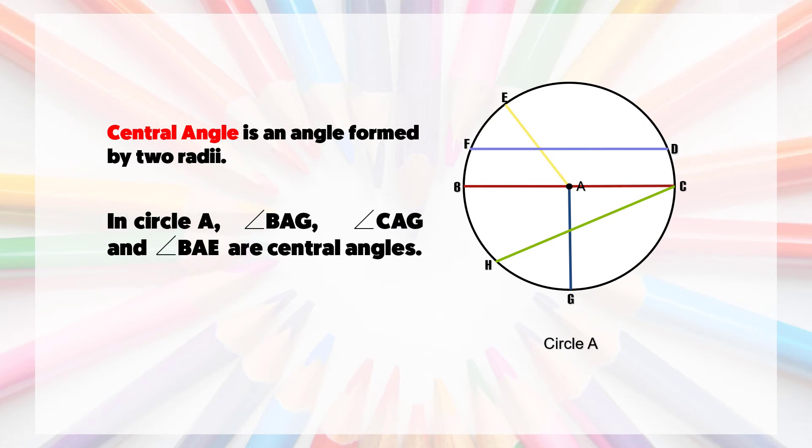In the given example, angle BAG, angle CAG, and angle BAE are central angles. Remember, the vertex of a central angle is always located in the center of the circle.